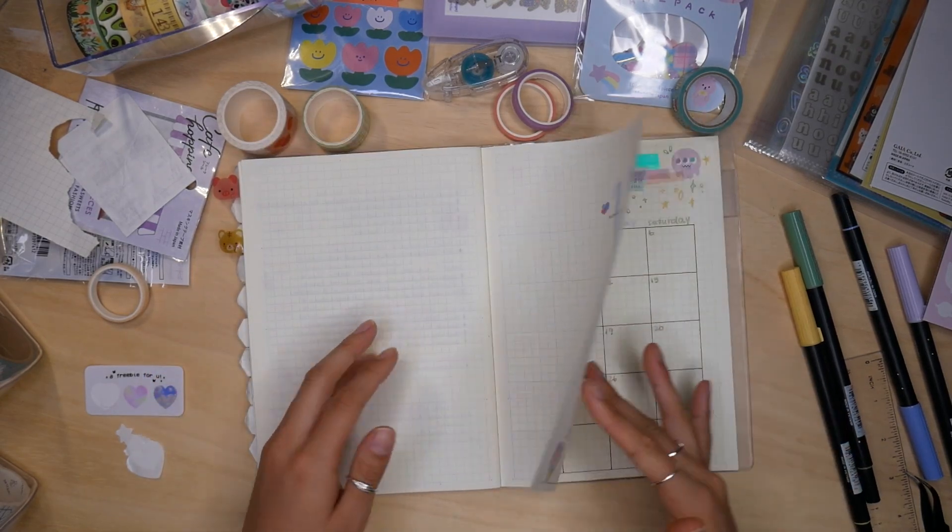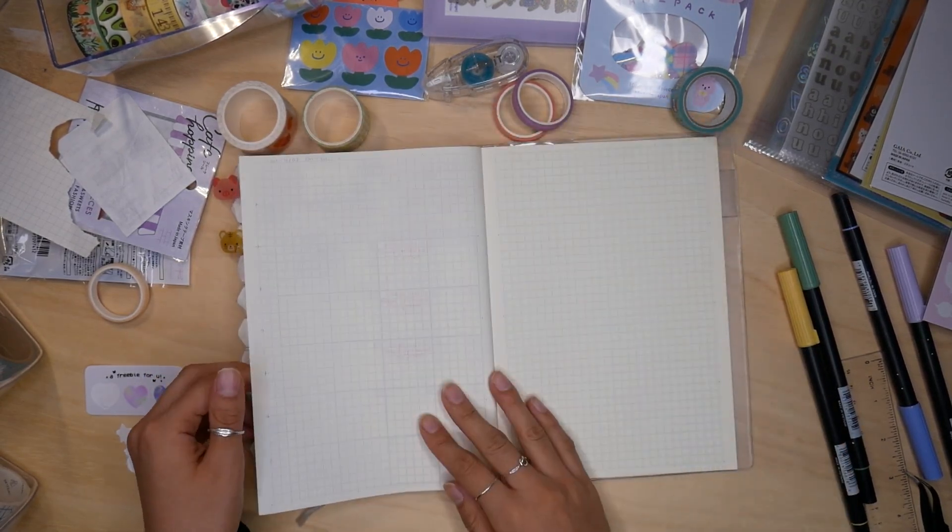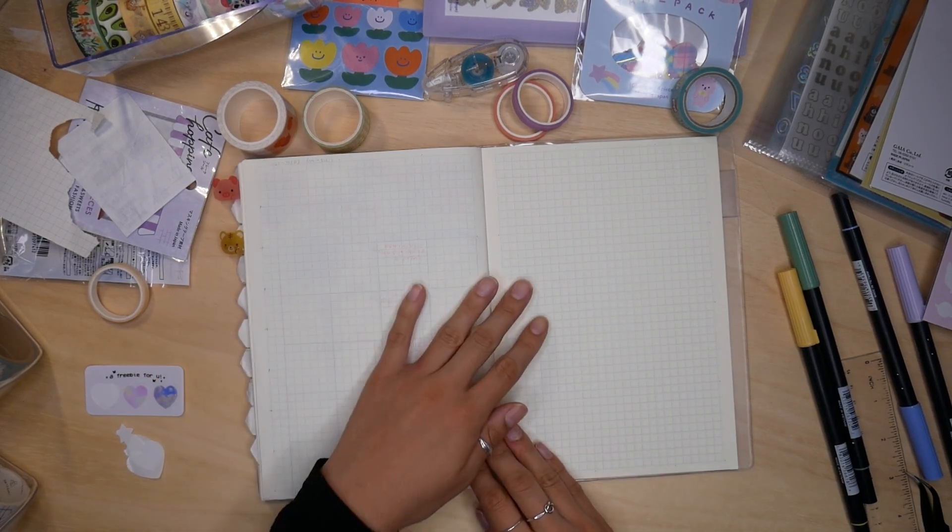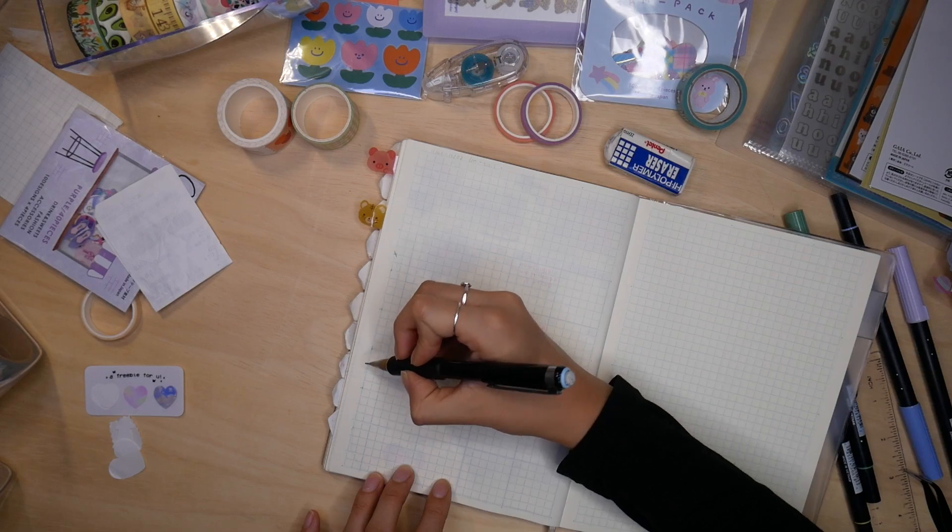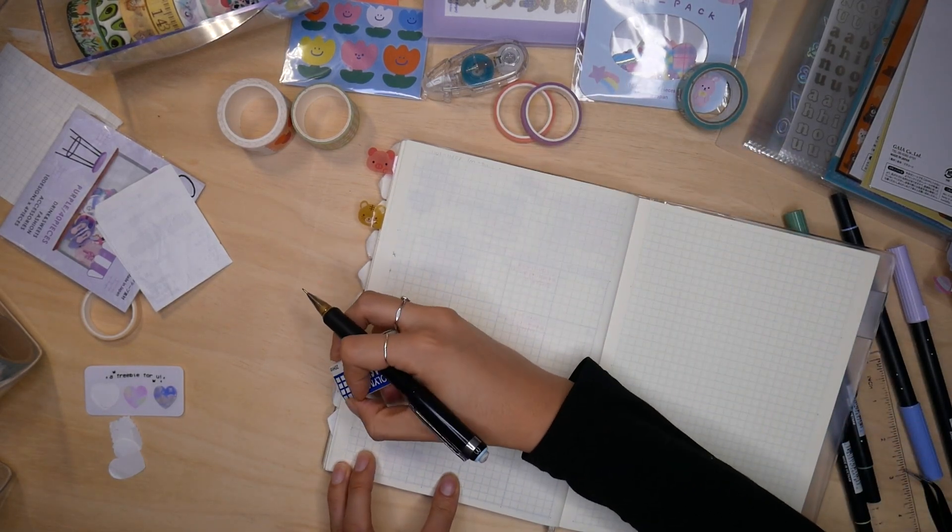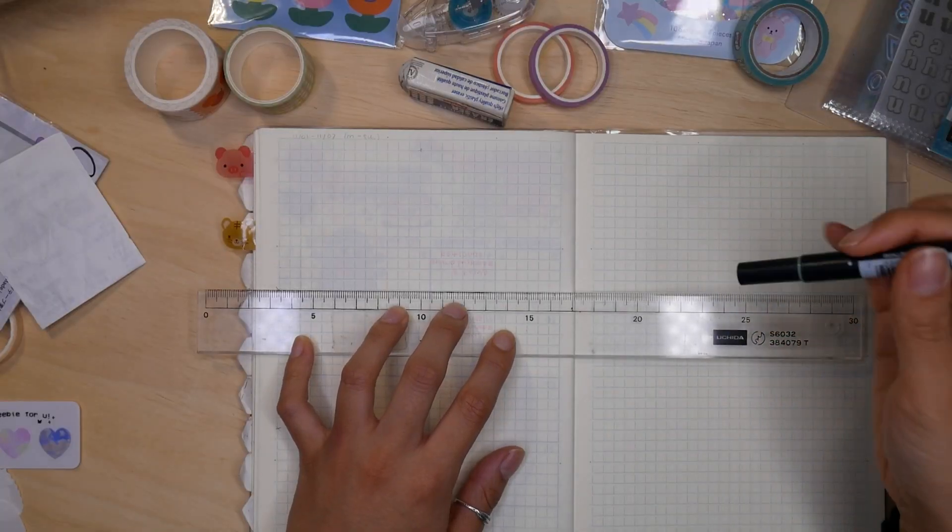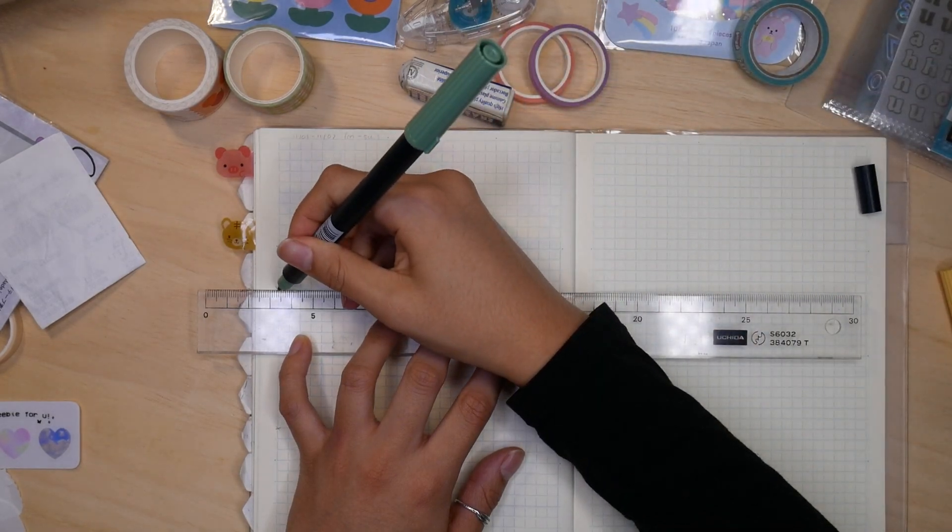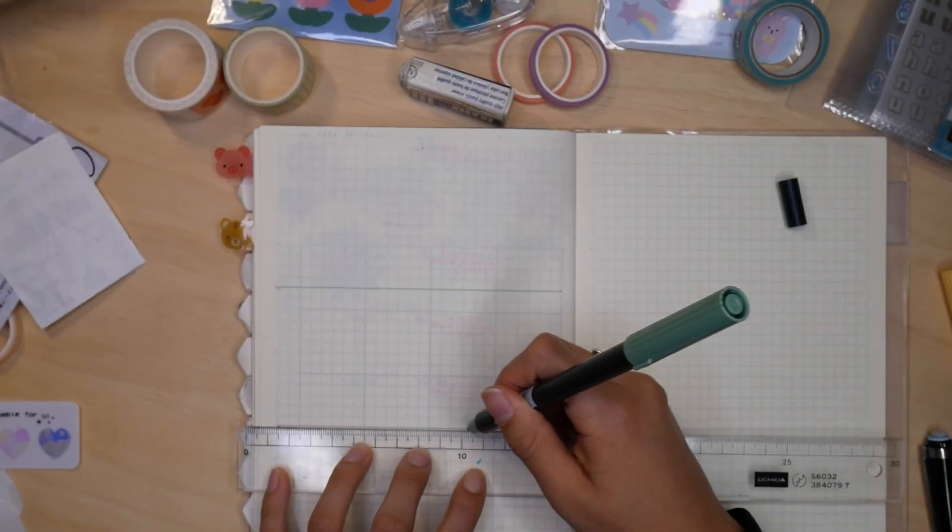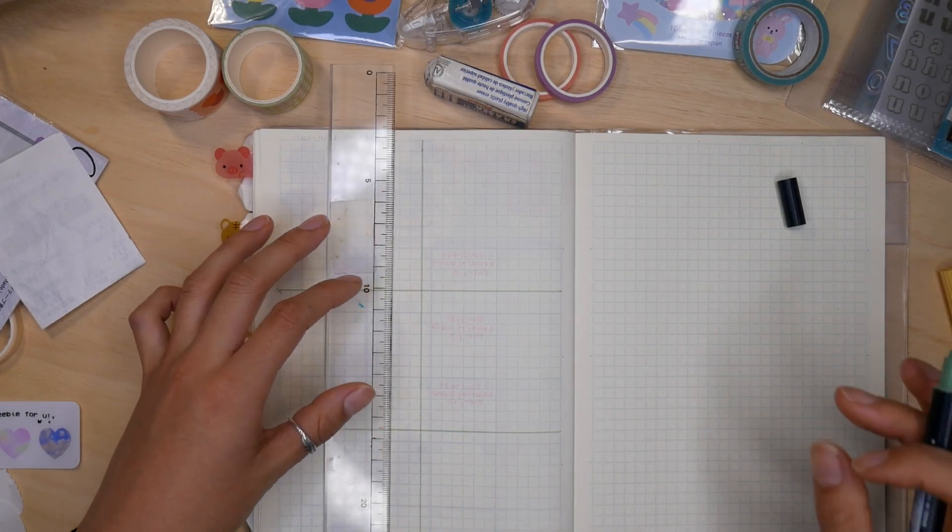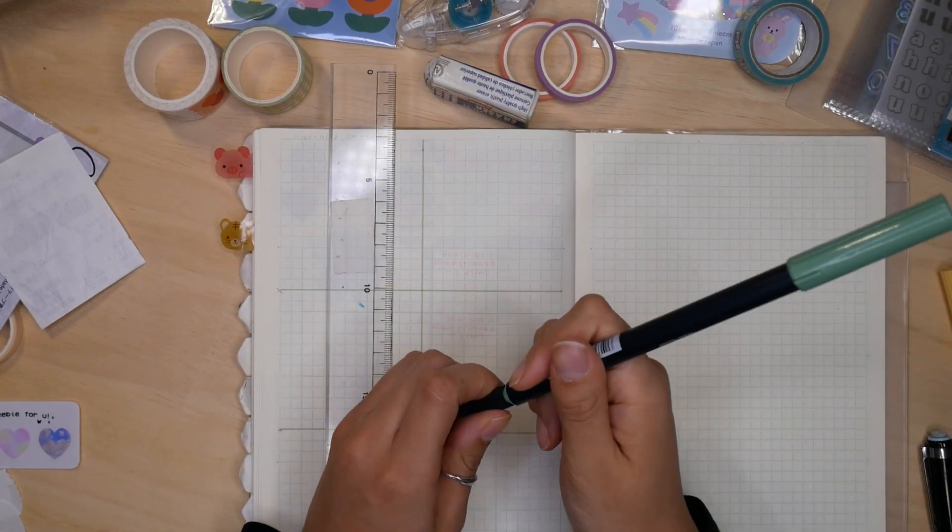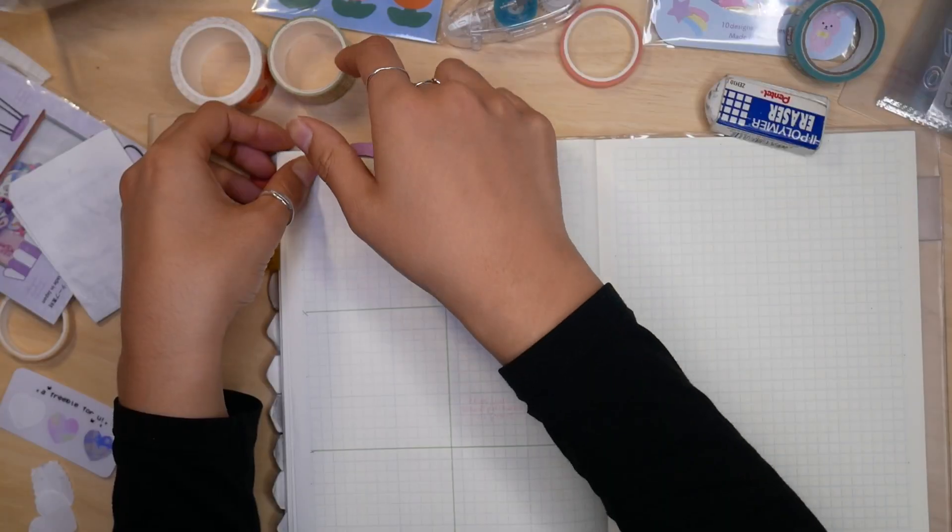This is what we have so far. All right, now moving on to my weekly spread. I wanted to have all seven days on one page and keep the other page blank. I split up my page into six boxes. Five of those boxes are for each of the weekdays, and the sixth box is for Saturday and Sunday. I don't really write much for the weekend, so one box is plenty.